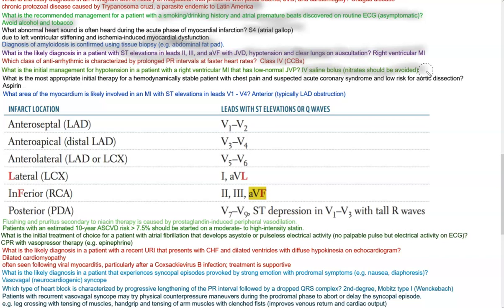What is the most appropriate initial therapy for a hemodynamically stable patient with chest pain and suspected acute coronary syndrome and low risk for aortic dissection? That would be aspirin. Always remember — first aspirin, then all the other medications following it along the algorithm, such as beta blockers.